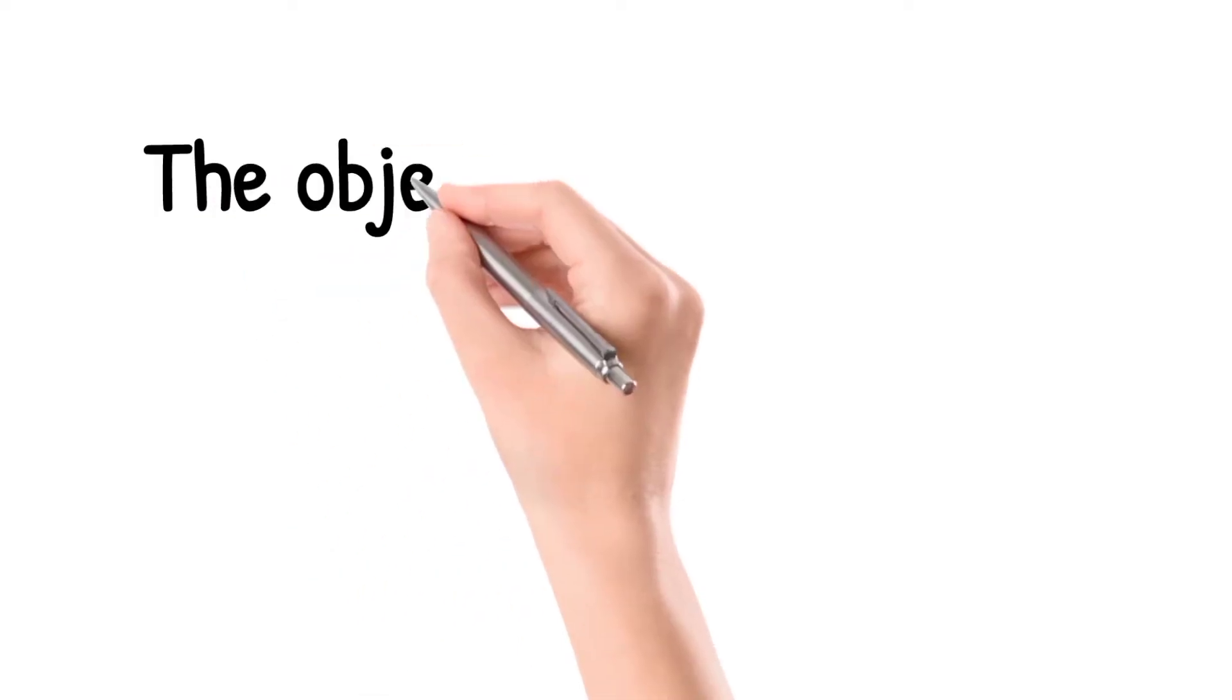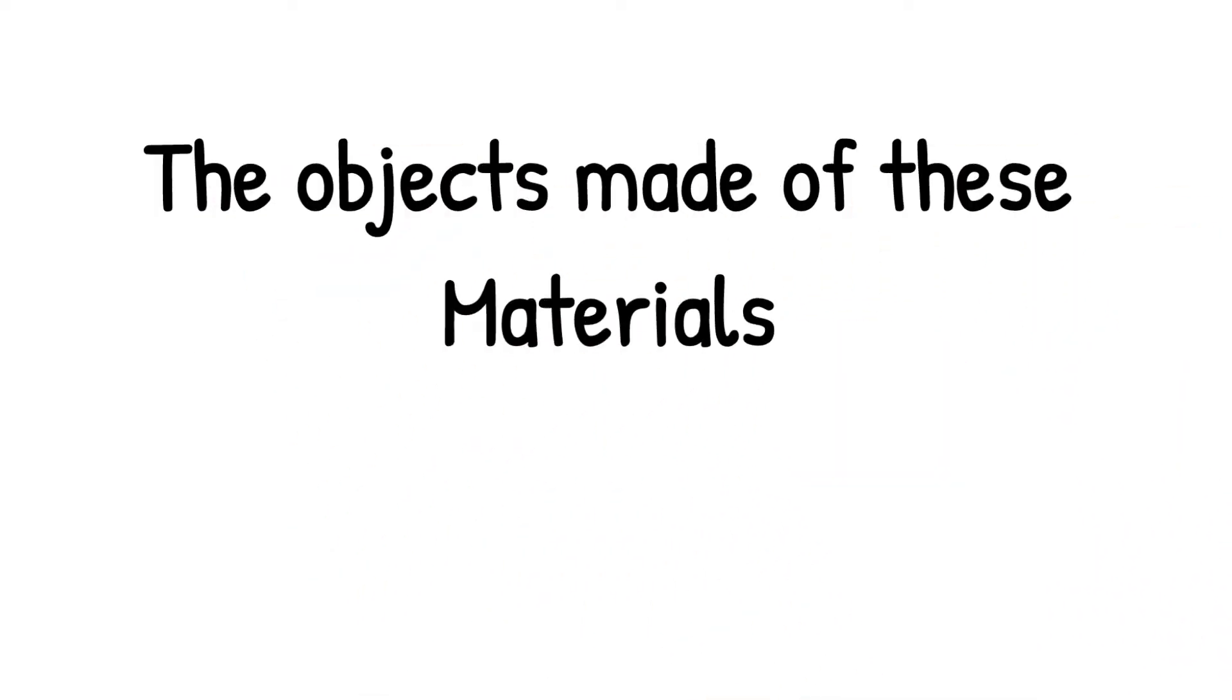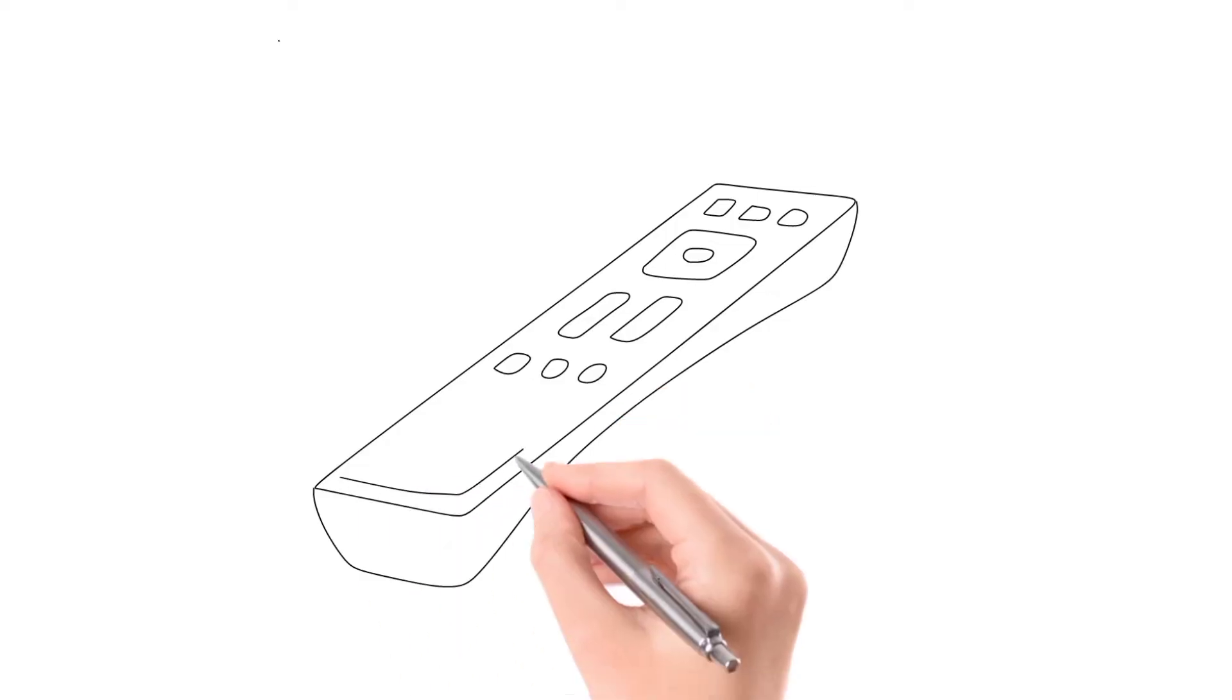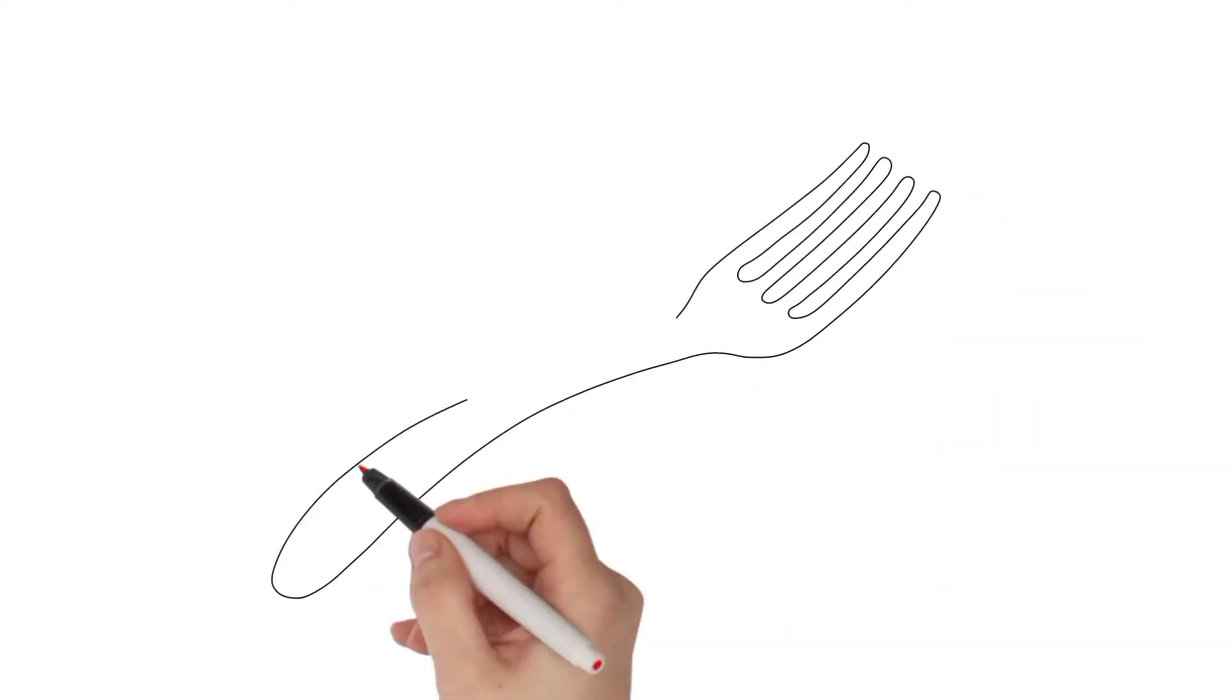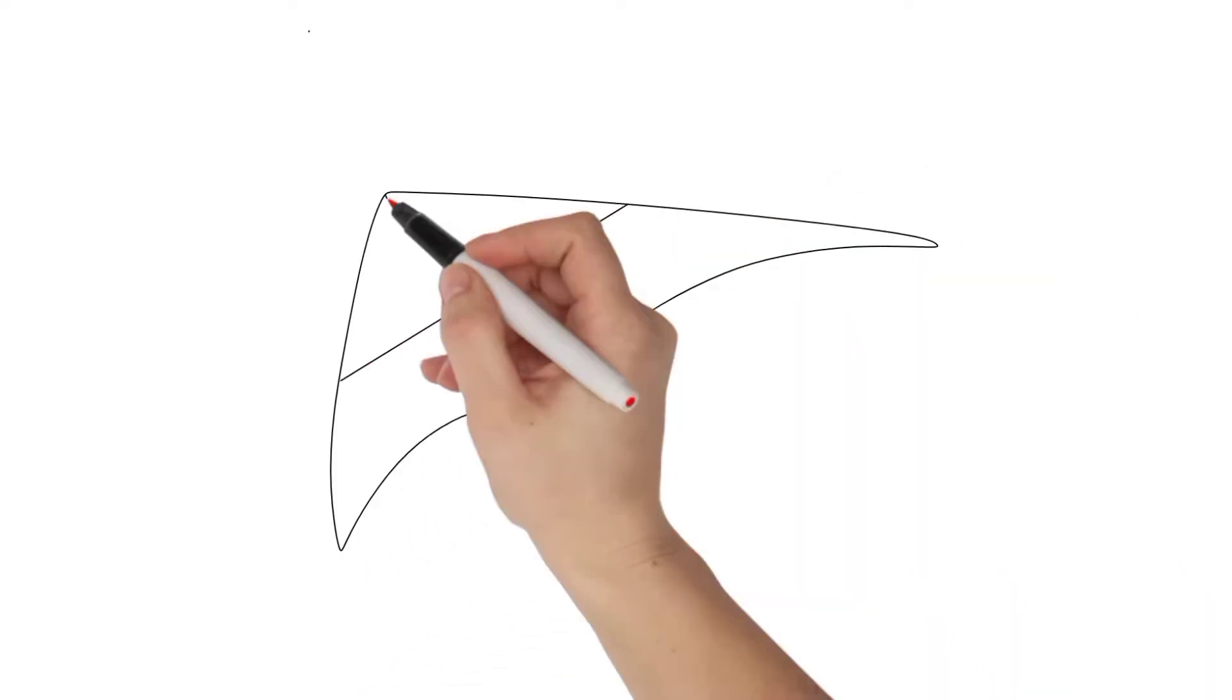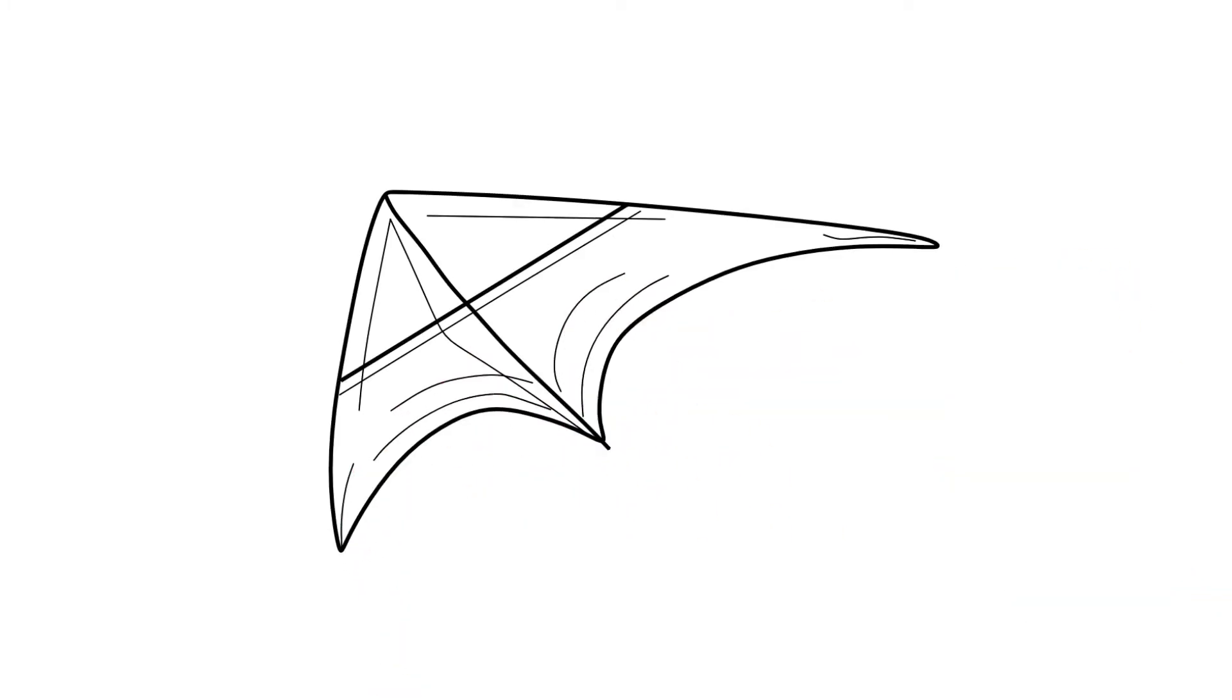The objects are made of these materials. Some objects are of wood, maybe of plastics, metals, papers, etc.